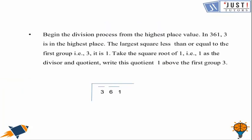Now let's see how to start the division process. First, we look at the first group which is 3. We find the largest square less than or equal to 3, which is 1. We take the square root of 1 as the divisor and quotient, so 1 times 1 equals 1, and write this quotient above the first group.